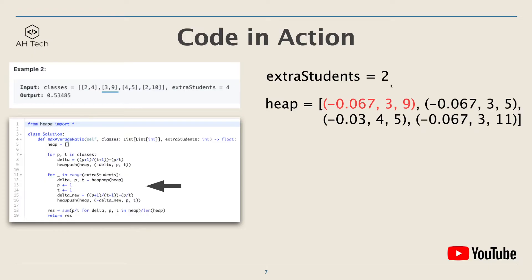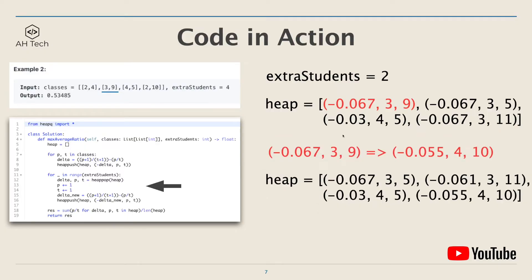Now the new heap is updated and we have two extra students left. Class [3, 9] now has the highest absolute delta, so we push one student into it, calculate the new delta, pass, and total, and get the new heap.